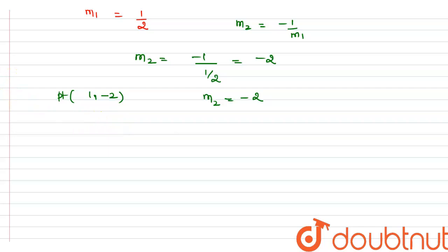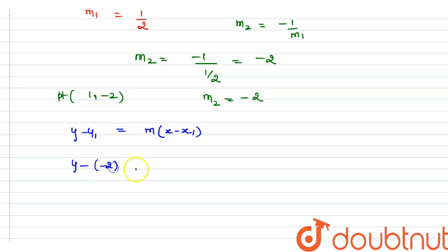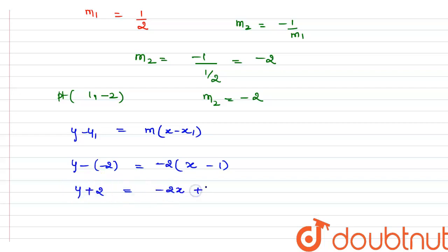Now we find the equation of the line using y minus y1 equals m times x minus x1. Substituting the values: y minus (minus 2) equals minus 2 times (x minus 1). This simplifies to y plus 2 equals minus 2x plus 2, and further simplifies to 2x plus y plus 1 equals 0. This is the required equation.